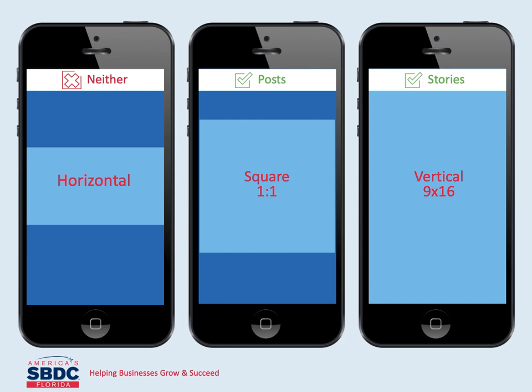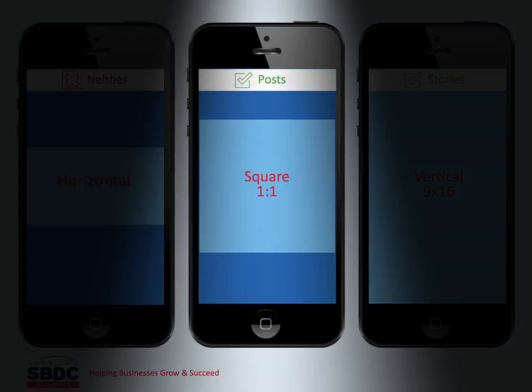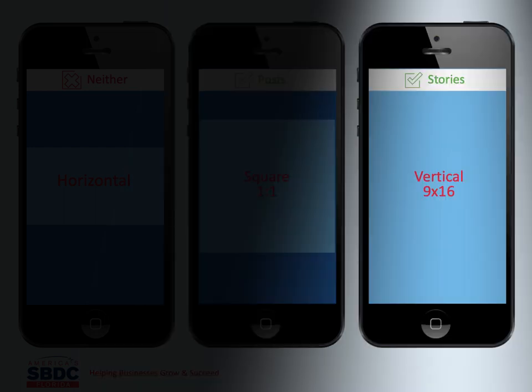There is an optimal size for your photos — actually there's an optimal size for the Instagram feed and an optimal size for stories. Do not post horizontal photos on either. It will be cropped out in the feed and it will shrink in stories. Square is the optimal shape for the feed. Vertical 9 by 16 is optimal for stories.